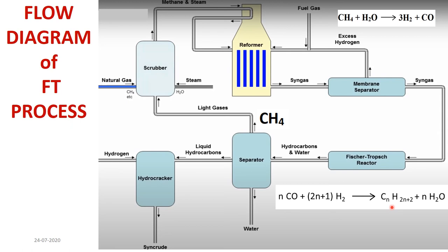The Fischer-Tropsch process is an industrially important heterogeneous catalysis reaction — the conversion of carbon monoxide and hydrogen into various hydrocarbons or oxygenated products. Evidence for this reaction comes from X-ray methods, single-crystal X-ray diffraction, IR, NMR, and other spectroscopic methods. Thank you for your attention.